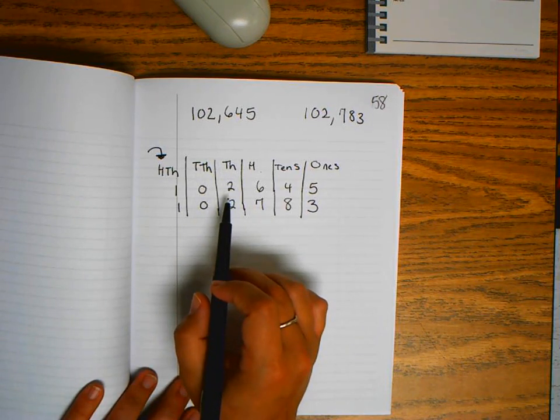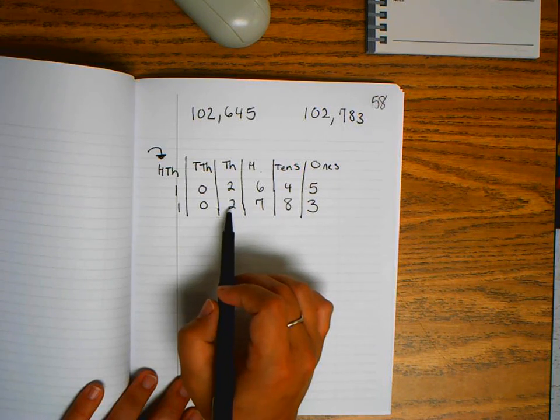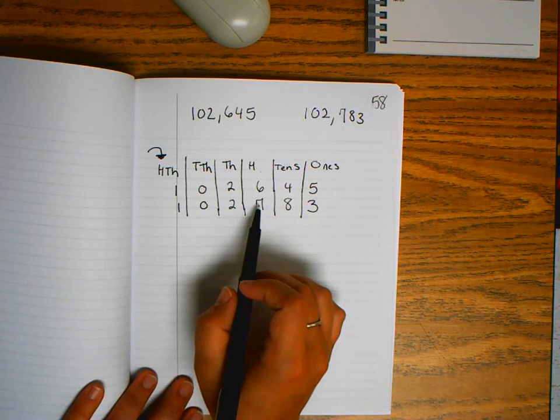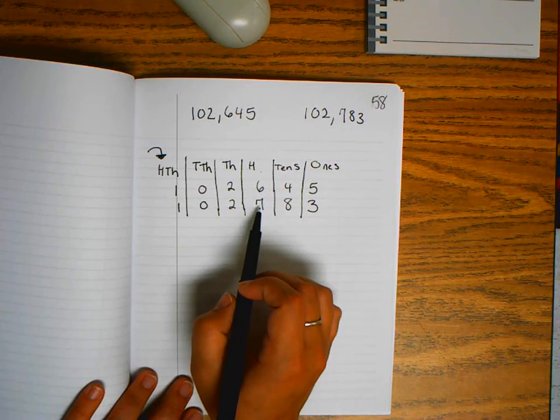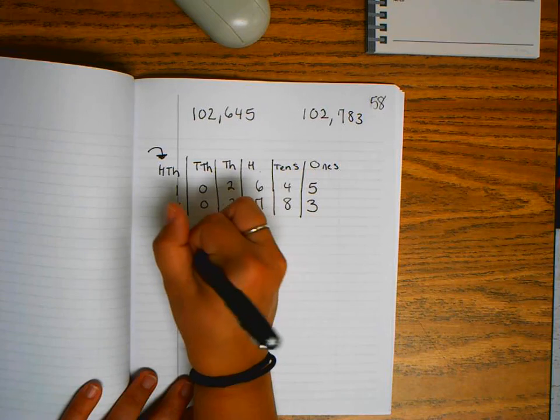I move to the next place. 2 and 2 - those are the same. I move to the next place. 6 and 7 - six is smaller than seven. Now I'm going to rewrite my numbers just how they were written at the top.